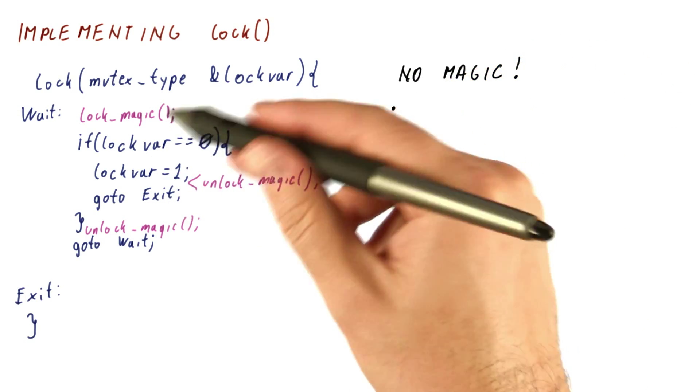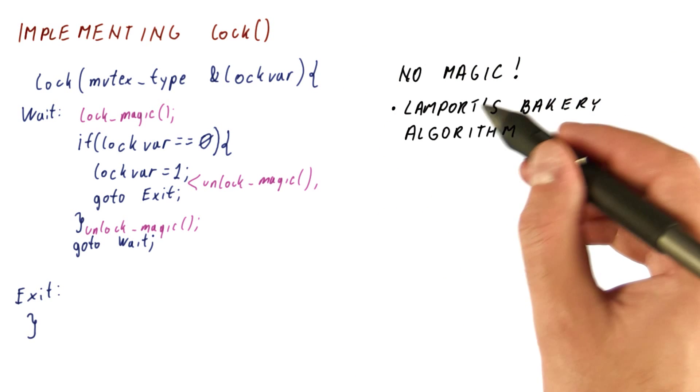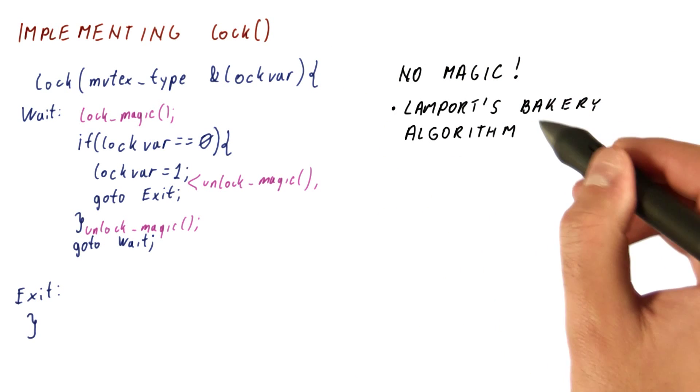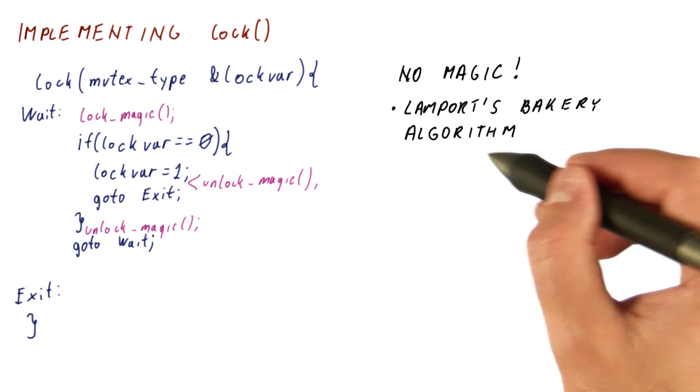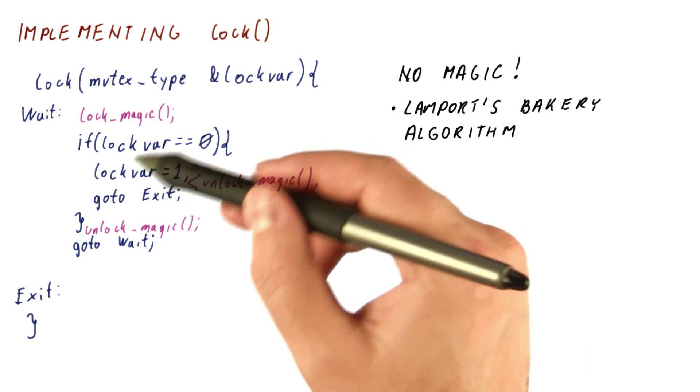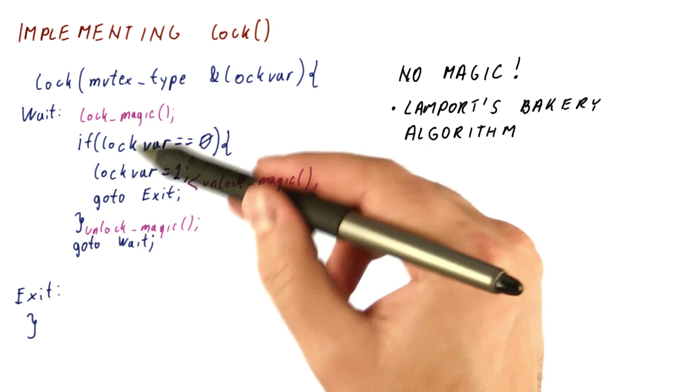There are several ways to get the effect that lock magic would give us. One way is to use what's called Lamport's Bakery algorithm or some other algorithm that actually is able to use normal load and store instructions to replace lock magic.